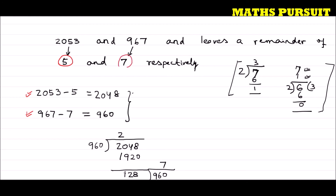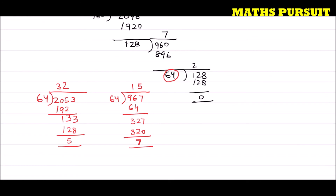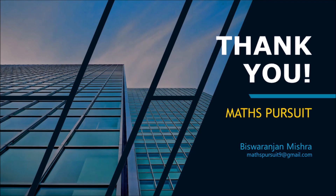So we found that the largest number is 64, which when divides 2053 and 967 gives remainders of 5 and 7 respectively. Hope you understood this — it is straightforward, just needing a step-by-step method. If you have any questions or doubts, please reach out in the comment section and I will get back to you. If you like my videos, please subscribe and share with your friends — this motivates me to create similar videos. Thank you. Bye.